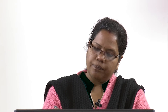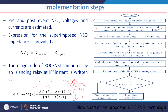The steps are: acquire voltage and current signals at the DER terminal and store pre- and post-event voltage and current data sampled at 1 kHz. Next, estimate the phasor using the weighted least error square (WLES) technique. Then calculate the pre- and post-event ΔZ2, and finally the rate of change of the impedance.